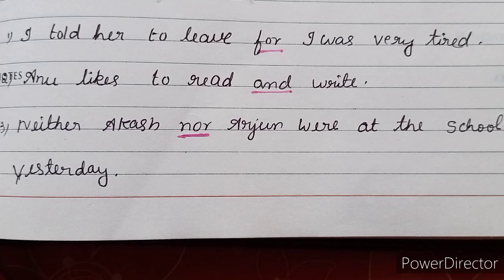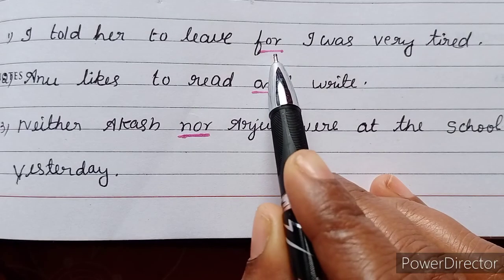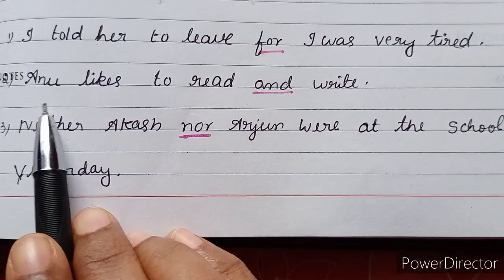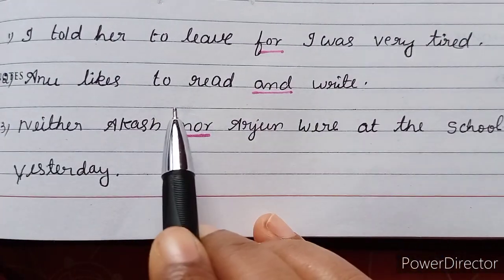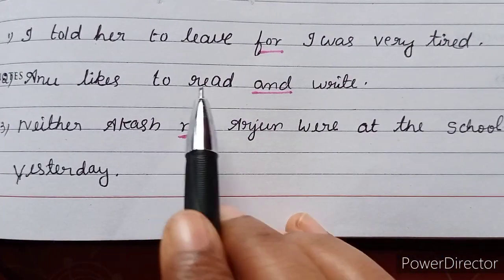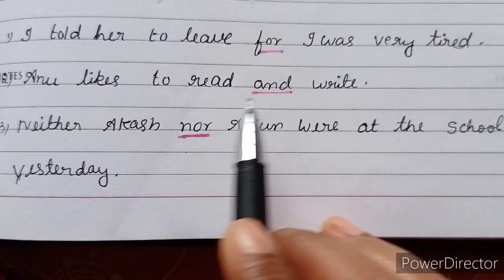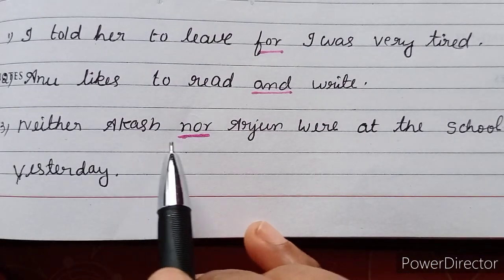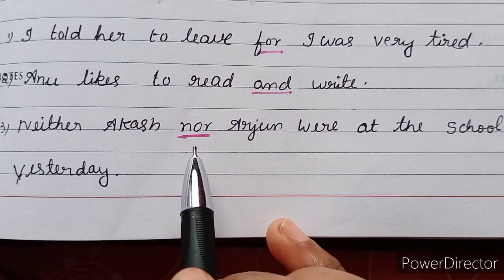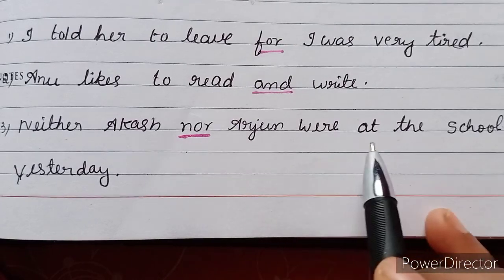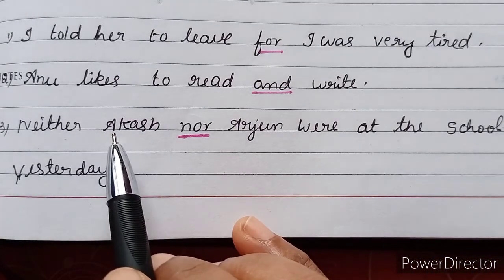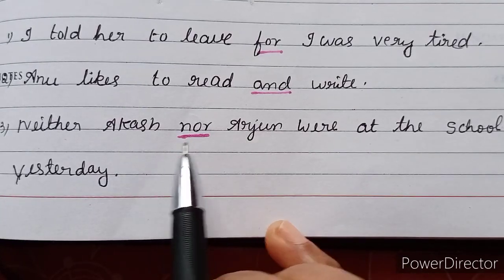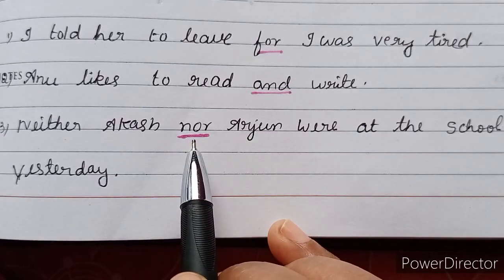Let's see examples for the FANBOYS acronym. 'I told her to leave, for I was very tired' — here 'for' is a coordinating conjunction. 'Anu likes to read and write' — 'read' and 'write' are joined by 'and.' 'Neither Akash nor Arjun were at the school yesterday' — Akash and Arjun are joined by 'nor.'